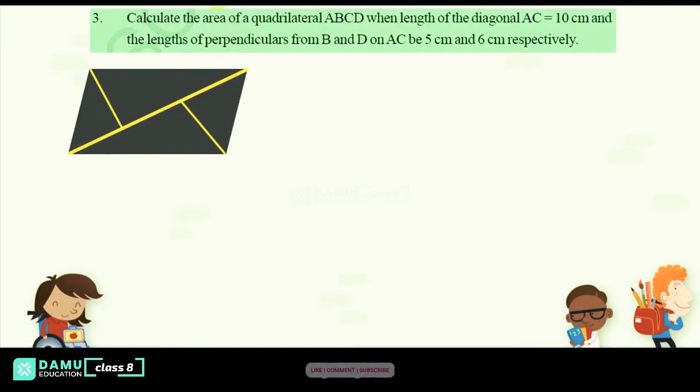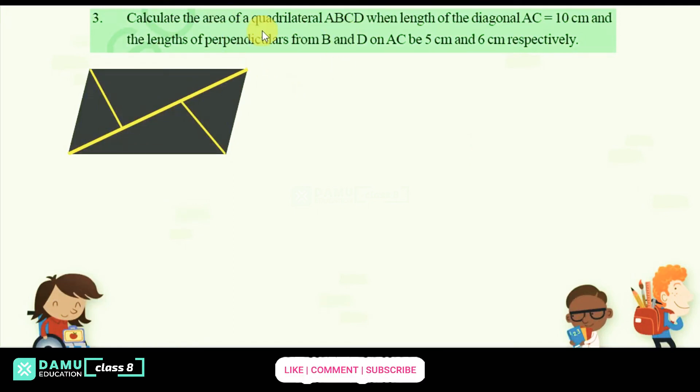Hello viewers, in this module we are going to discuss the third question: calculate the area of quadrilateral ABCD, where the length of diagonal AC is equal to 10 cm and the lengths of perpendiculars from B and D on AC are 5 cm and 6 cm respectively.